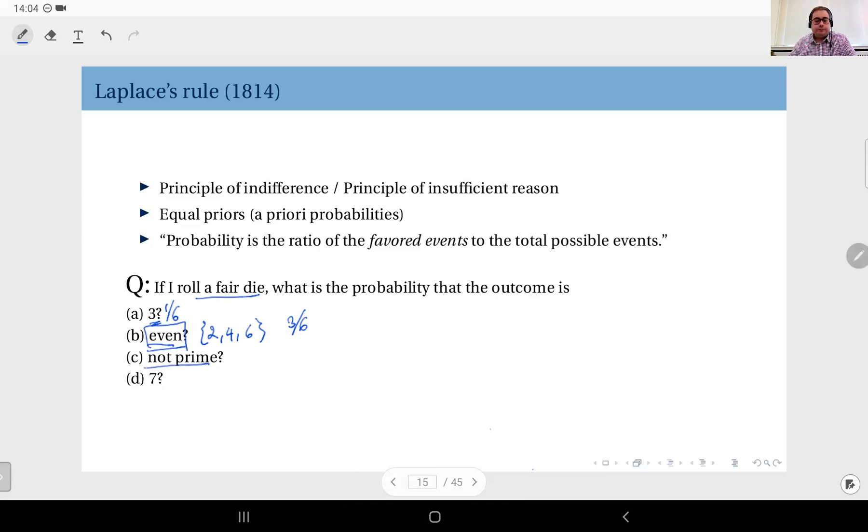Not prime? Again, write out the possible outcomes. Exclude the primes: I have one, I don't have two—that's a prime number—I don't have three, I have four, I exclude five, and I include six. So again, since I have three possible outcomes in this event, the answer to this would be three over six.